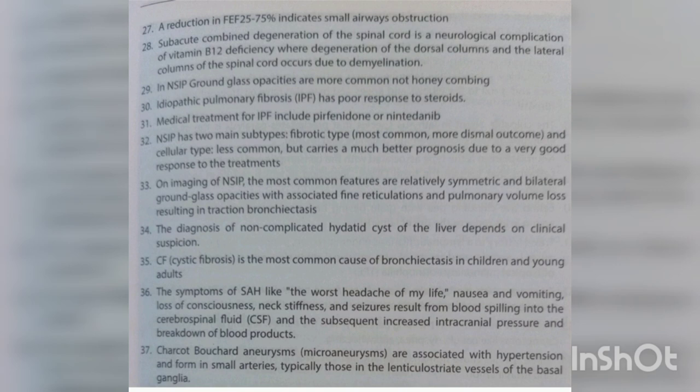NSIP has two main subtypes: the fibrotic type, which is most common with a dismal outcome, and the cellular type, which is less common but carries a much better prognosis due to very good response to treatment. On imaging, the most common features of NSIP are relatively symmetrical and bilateral ground glass opacities with associated fine reticulations, pulmonary volume loss, and traction bronchiectasis.